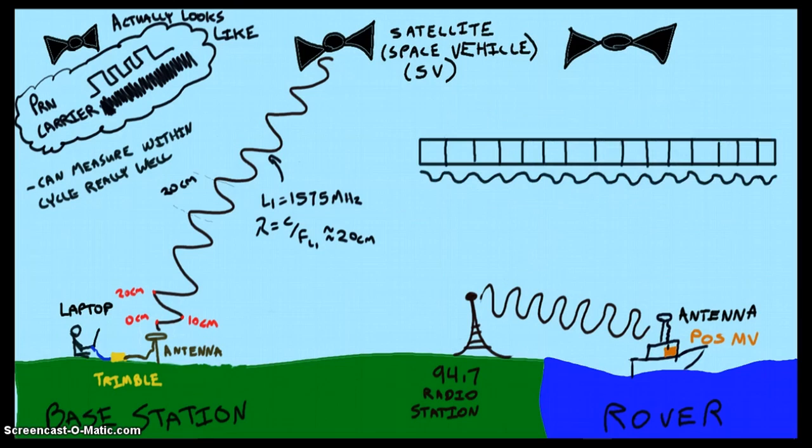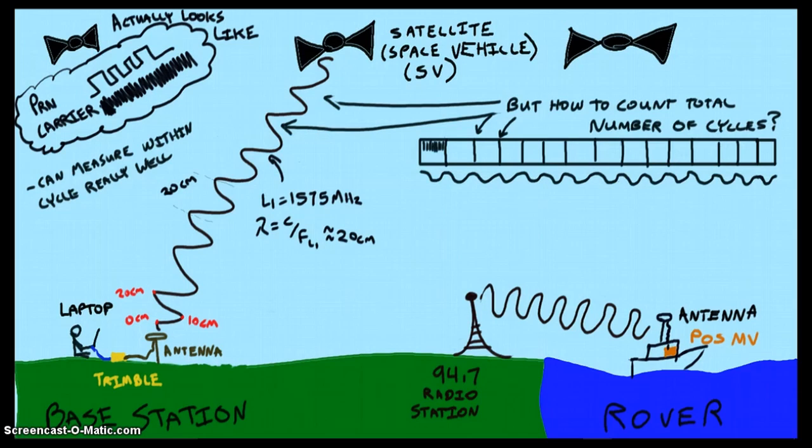It's a bit like having a tape measure that has centimeter marks, but all the meter numbers have been erased, so I don't know if my measurement is 10.26 meters, or 11.26 meters, or 15.26 meters. For GPS, how do you know how many cycles occur between satellite and receiver?